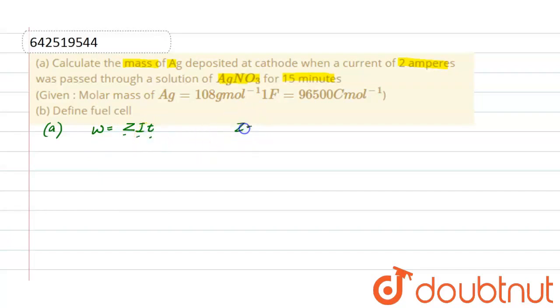Z is equivalent weight upon Faraday, or molecular weight by N-factor into Faraday. The N-factor for Ag, the reaction at cathode is Ag+ plus electron gives rise to Ag solid. So N-factor is 1 because one electron is involved.